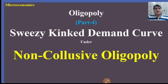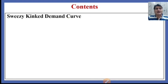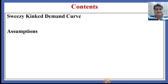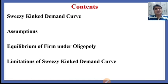Now in this fourth part we shall discuss the Sweezy Kinked demand curve non-collusive oligopoly. In this part we discuss what is the Sweezy Kinked demand curve and why the demand curve is called kinked, what are the assumptions on the basis of which the Sweezy Kinked demand curve functions, how does the oligopolist achieve equilibrium, and what are the limitations or the criticism made on the Sweezy Kinked demand curve.